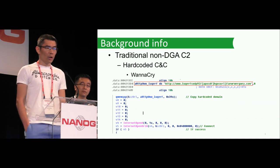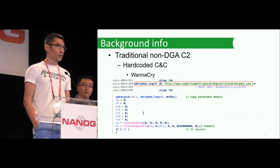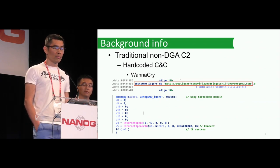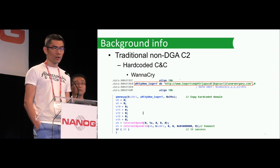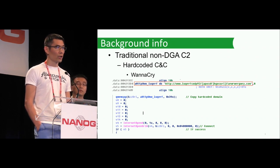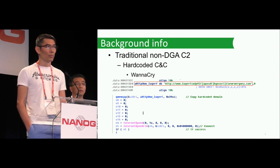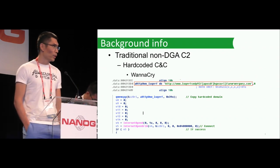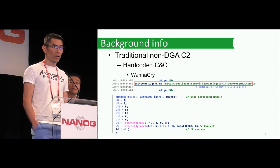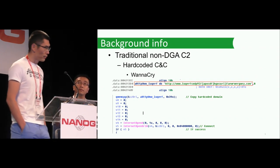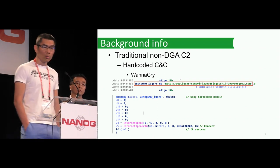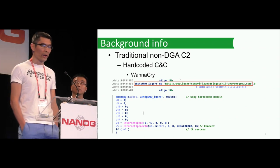We all know most malwares need to have some kind of mechanism to talk with their C2 command controllers. Most malwares these days use hard-coded C2s. By hard-coded, we mean it's either a fixed IP address or DNS name. A very good example is WannaCry — we all know that this year, in May, WannaCry made some really serious damage.